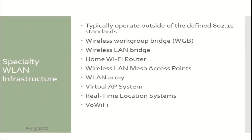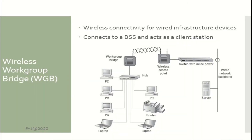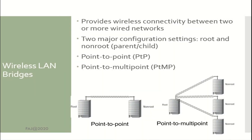Specialty wireless LAN infrastructure typically operates outside of the defined 802.11 standards. A Wireless Workgroup Bridge provides wireless connectivity for wired infrastructure devices; it connects to a BSS and acts as a client station. A Wireless LAN Bridge provides wireless connectivity between two or more wired networks. Its two major configuration settings are root and non-root, also known as parent and child. The bridge can be point-to-point or point-to-multipoint.